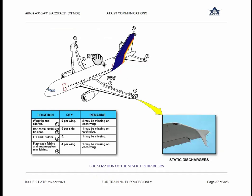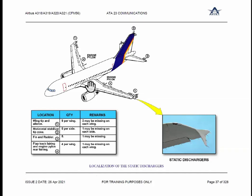Otherwise they would have placed them on the fuselage, but because the charge would come back, they are on the extremes. Do you think the charge is still there on the fuselage after discharging from the static discharger wicks, or is it 100% discharged? Some charge will always remain. So how will this charge go? When it lands — through the tire or the grounding cable.